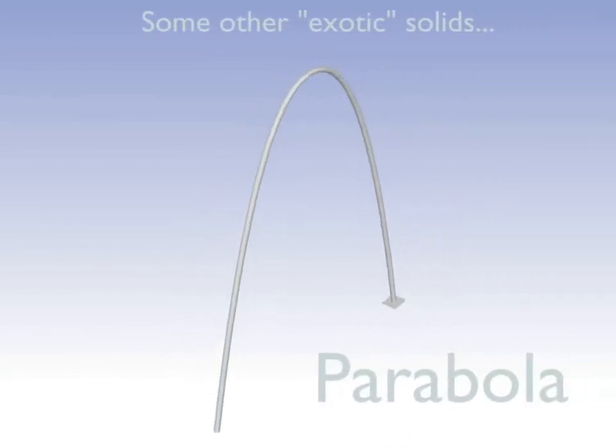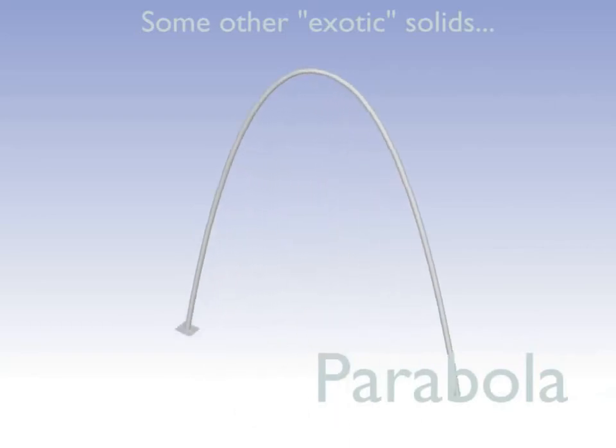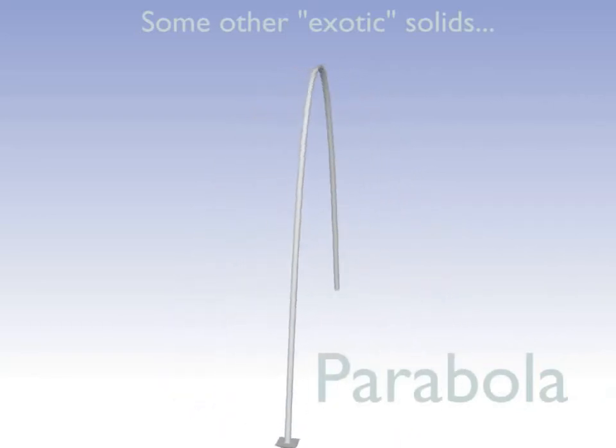Parabola is also one of the exotic collision shapes. It can be used instead of a ray. For example, if you want to shoot a cannonball which doesn't have a perfectly straight trajectory.